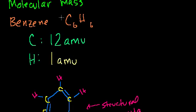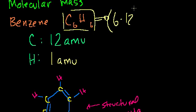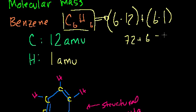So what is the mass of 1 molecule of benzene? Well, it's 6 times the carbon mass. So 6 times 12 plus 6 times the mass of hydrogen, plus 6 times 1. So that is 72 plus 6 which equals 78.